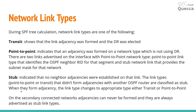The last type is stub, which indicates that no neighbor adjacencies were established on that link. Link types — usually point-to-point or transit — that didn't form adjacency with another OSPF router are classified as stub. When they form adjacency, the link type changes to the appropriate type, either transit or point-to-point. On secondary connected networks, adjacencies can never be formed and they are always advertised as stub link types.